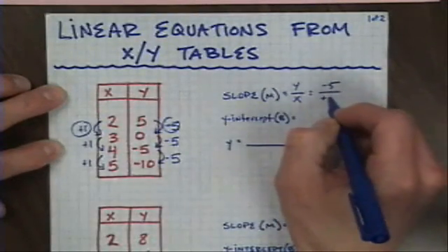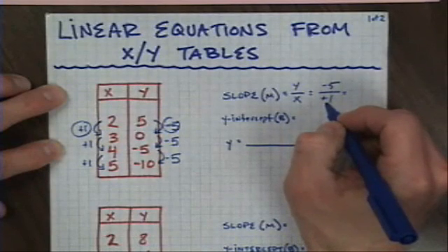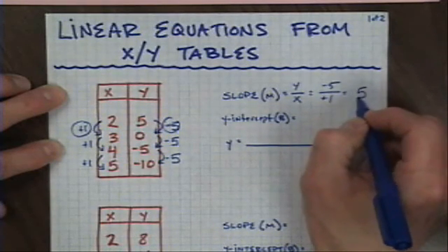The plus 1 is my change in x, so I'll place that over here. And 1 goes into 5, 5 times. Negative and a positive produce a negative. So my slope is going to be negative 5.